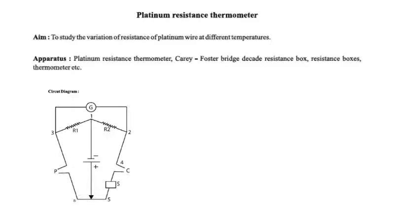In this platinum resistance thermometer experiment, we are going to study the variation of resistance of platinum wire at different temperatures and calculate the temperature coefficient of the platinum wire. The resistance of the platinum wire is very small and difficult to calculate accurately, so in this experiment we are going to use a Carey Foster bridge and a decade resistance box to calculate the small change in resistance.